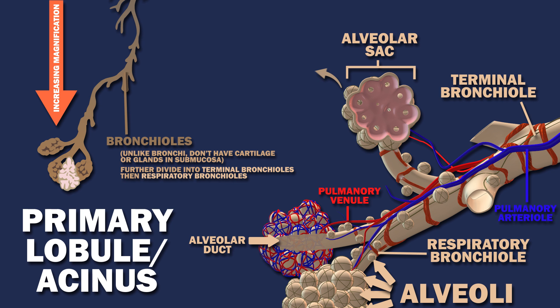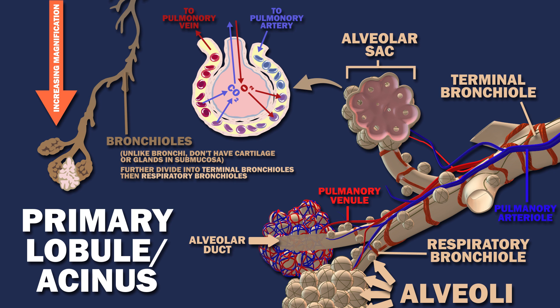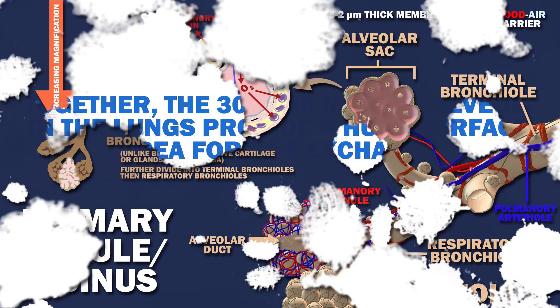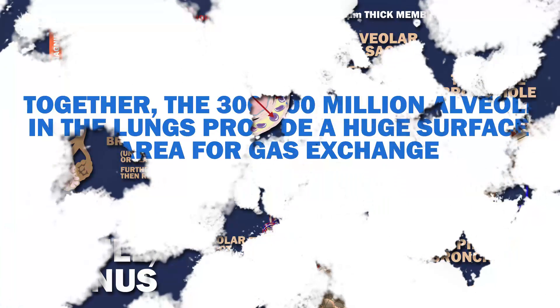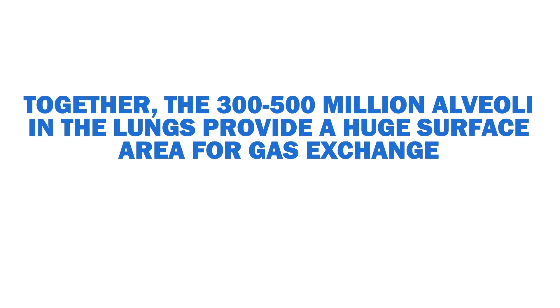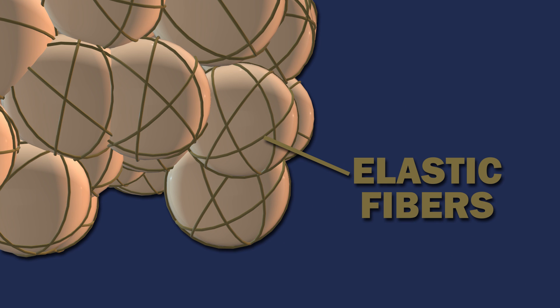The alveoli are where gas exchange takes place. Their 1.5 to 2 micrometer thick membranes form the blood-air barrier. Together, the 300 to 500 million alveoli in the lungs provide a huge surface for gas exchange. Elastic fibers allow the alveoli to expand on inhalation and spring back on exhalation to help expel carbon dioxide.